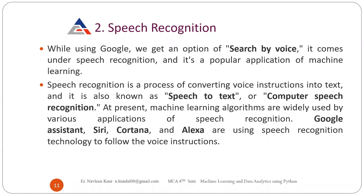What is actually happening is that your voice is converted into text. Sometimes when I search something on my smart TV, you can see that whatever you are saying, your words are being typed simultaneously in front of you. It means how the search is happening — it is just converting your speech, your words, into text. This is known as the speech-to-text method, or computer speech recognition. Machine learning algorithms are widely used in this, and in Google Assistant, Siri, and Alexa, this speech recognition technology is working.